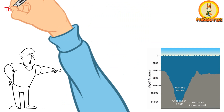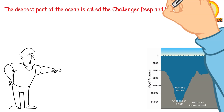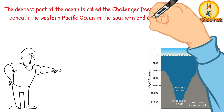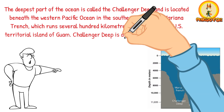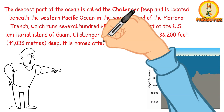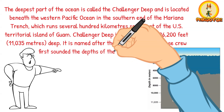The deepest part of the ocean is called the Challenger Deep, and is located beneath the Western Pacific Ocean, in the southern end of the Mariana Trench, which runs several hundred kilometers southwest of the U.S. territorial island of Guam. Challenger Deep is approximately 36,200 feet, that is 11,035 meters, deep. It is named after the HMS Challenger, whose crew first sounded the depths of the trench in 1875.